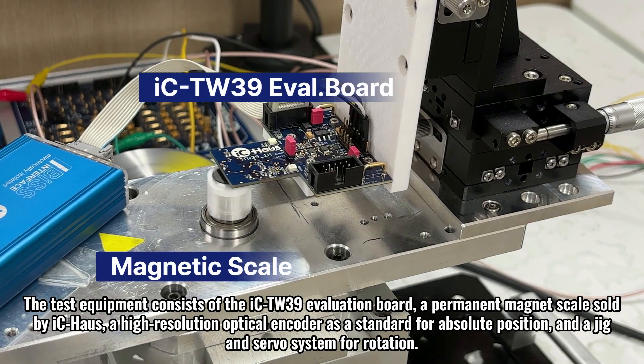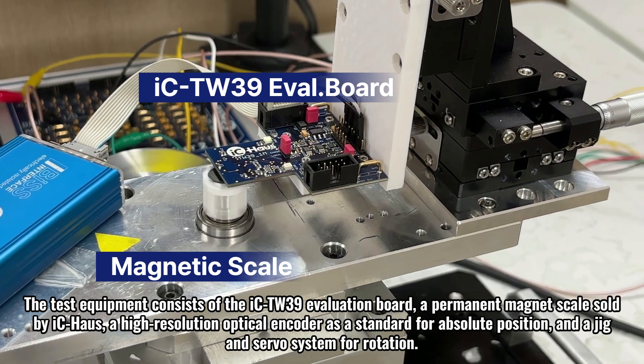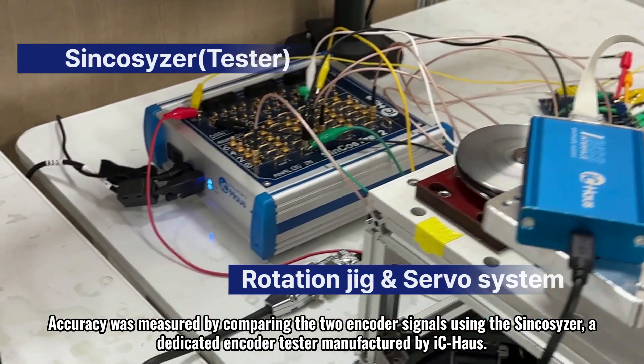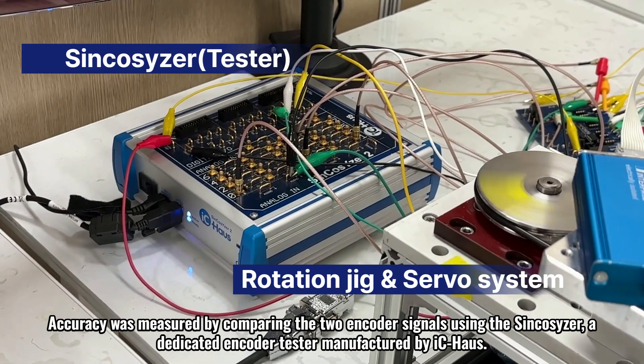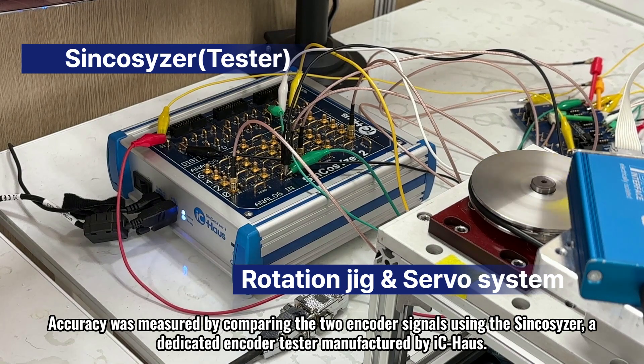The test equipment consists of the IC-TW39 evaluation board, a permanent magnet scale sold by IC House, a high-resolution optical encoder as a standard for absolute position, and a jig and servo system for rotation. Accuracy was measured by comparing the two encoder signals using the Synca Scissor, a dedicated encoder tester manufactured by IC House.